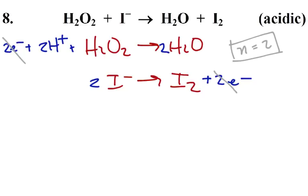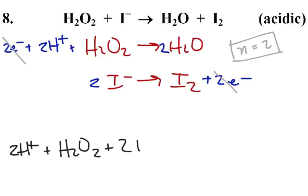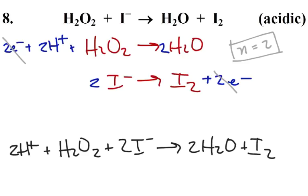We can just put everything together. Our final reaction here is two H pluses, plus H2O2, plus two I minuses, turns into two H2Os, plus I2. And that's our finished equation.